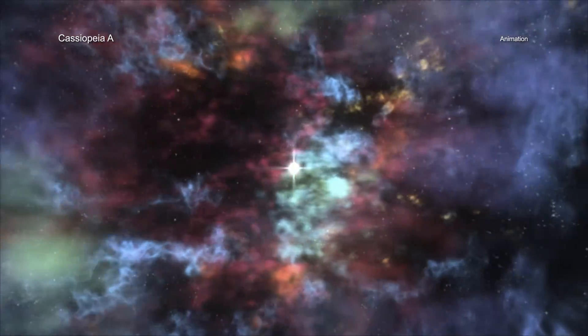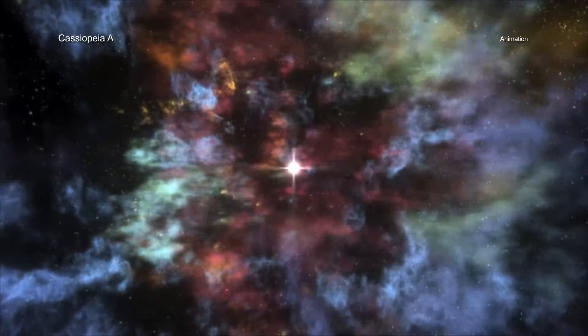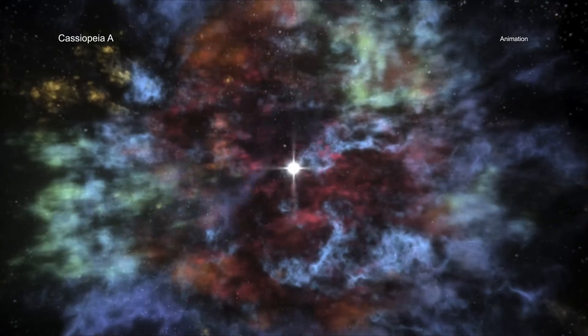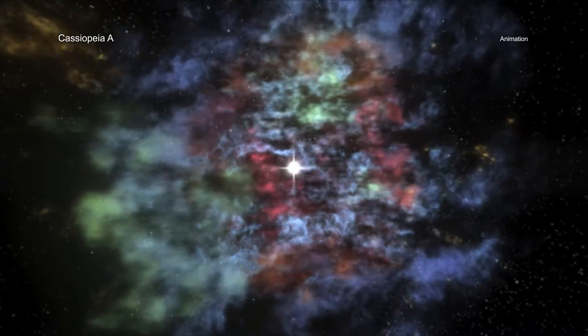In the outer parts of Cas A, the blast wave is striking surrounding gas that was ejected by the star between about 10,000 and 100,000 years before the explosion.